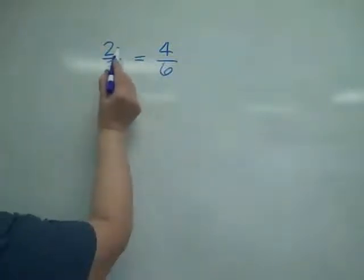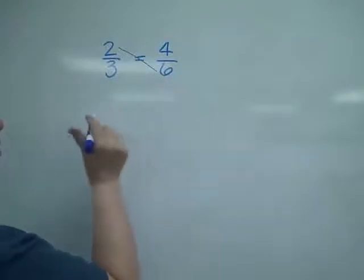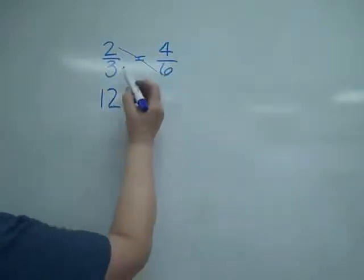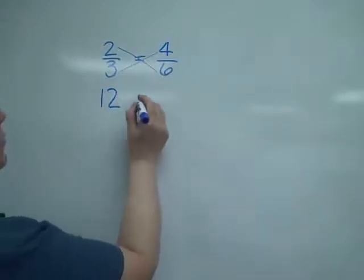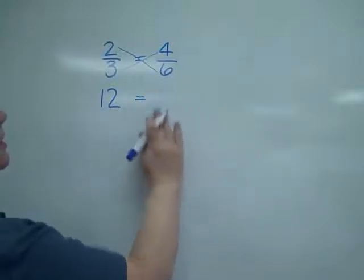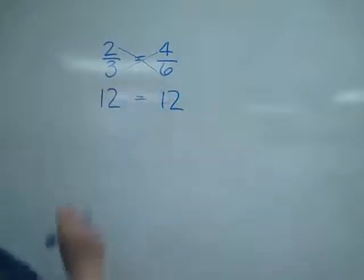I'm going to multiply the top of one fraction times the bottom of the other. 2 times 6 is 12. Then I'm also going to multiply the bottom times the top, opposite of what I did, and 3 times 4 is 12. So I know that this is a correct proportion.